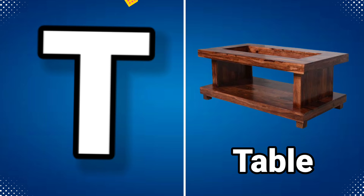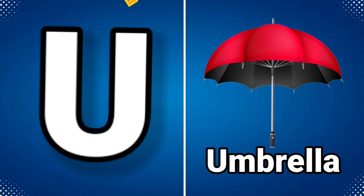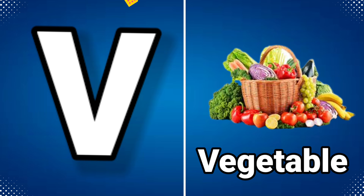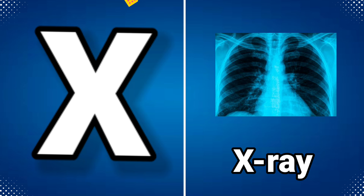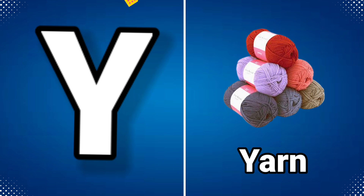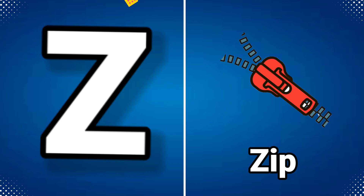T for table, U for umbrella, V for vegetable, W for watch, X for x-ray, Y for yarn, Z for jeep.